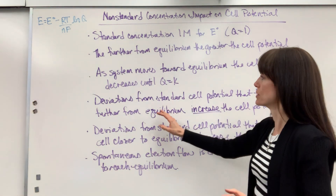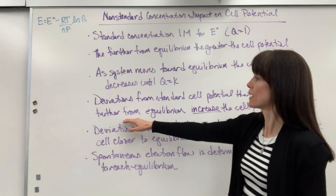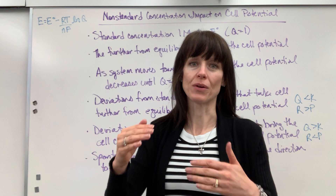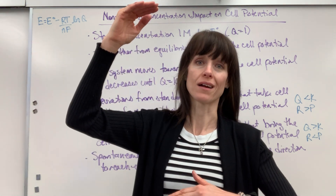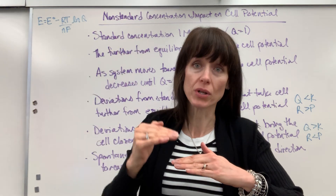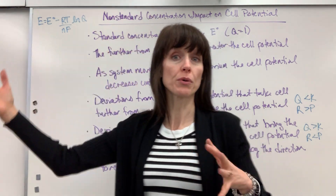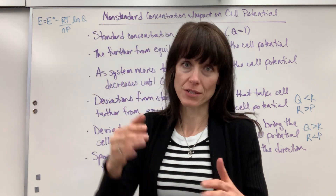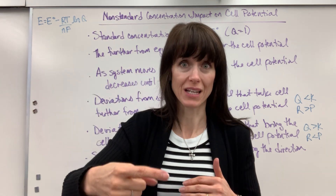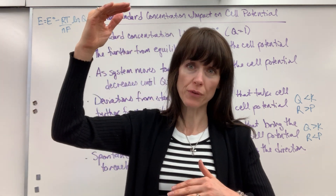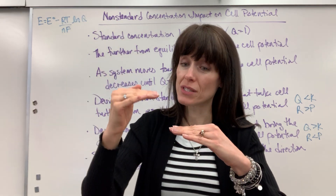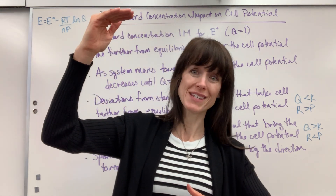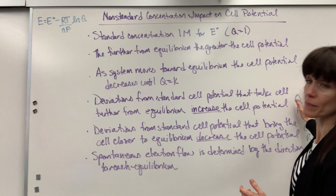Deviations from standard cell potential that take the cell further from equilibrium increase the potential. If we have something further from equilibrium, it makes the waterfall higher — there is an even greater voltage that can push those electrons. The further we are from equilibrium, the greater the potential, because everything in nature is driven toward the stability of equilibrium, and the further you go from it, the greater the drive — the voltage, the push — to bring it to equilibrium.